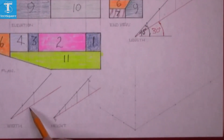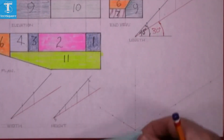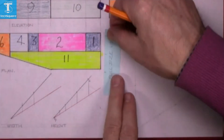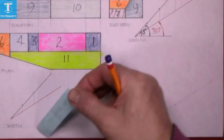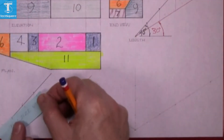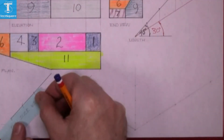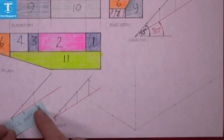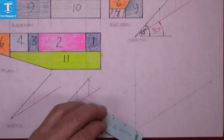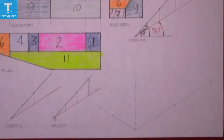The width is the same thing, using another template. I took the widths, marked them on the 45 degree line, scaled them down to the 30, marked them on the template and transferred them onto the isometric view.